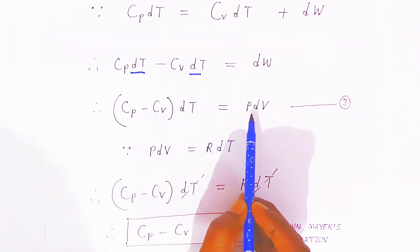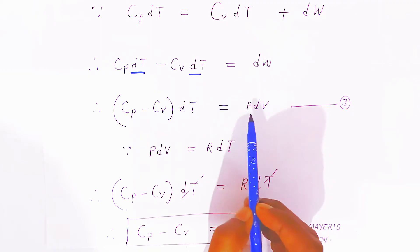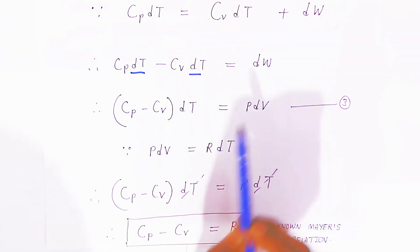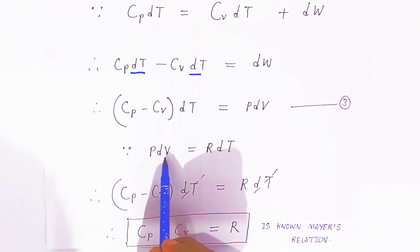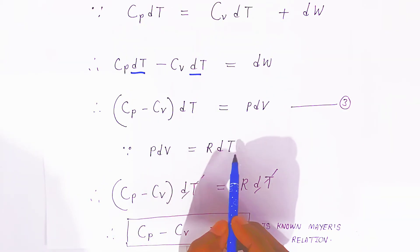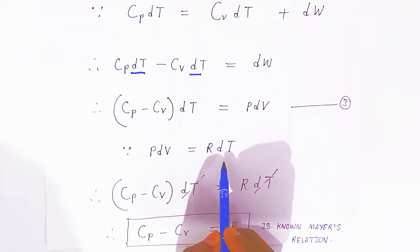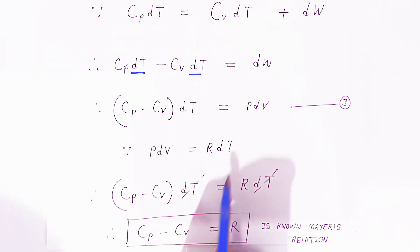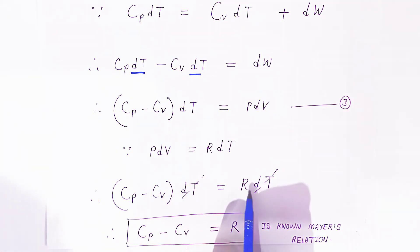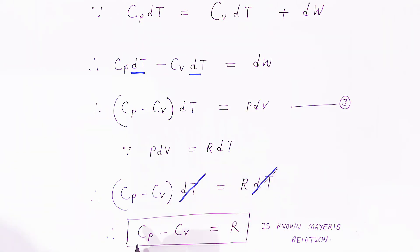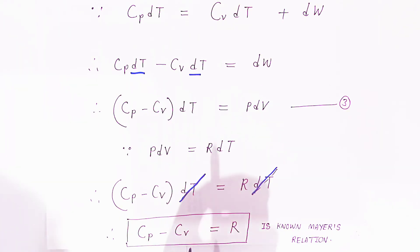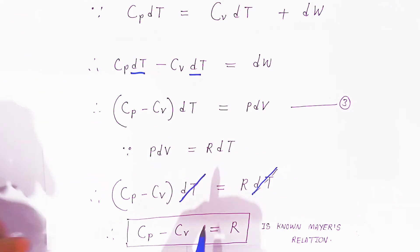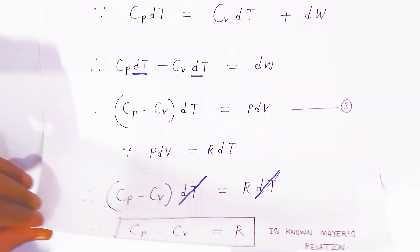Now dW = P·dV, and using the ideal gas law P·dV = R·dT. Substituting: (Cp − Cv)·dT = R·dT. Cancelling dT from both sides gives Cp − Cv = R. This is known as Mayer's relation, and it is an important result for three-mark questions in board examinations.